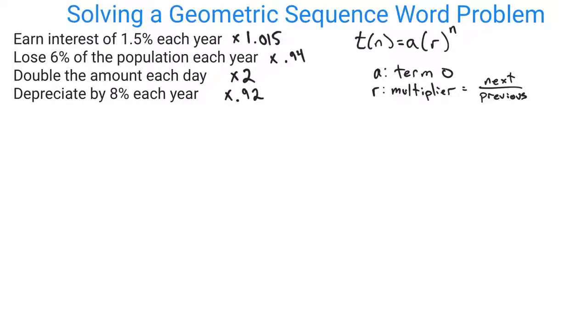The general form of the equation we're going to be writing is T(n) = a × r^n, where a is term 0, where it starts or begins, and r is the multiplier, or next over previous. That's what these examples are, that particular multiplier.